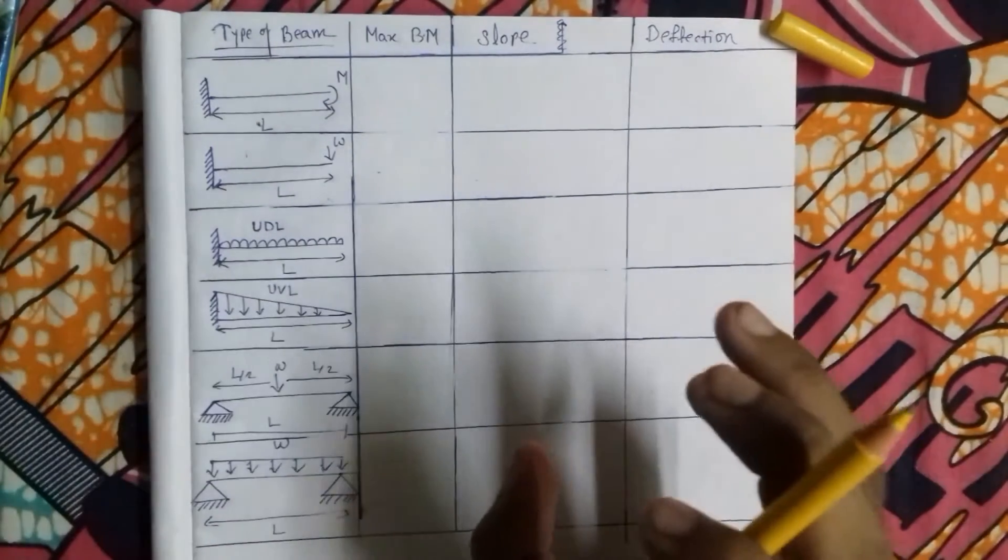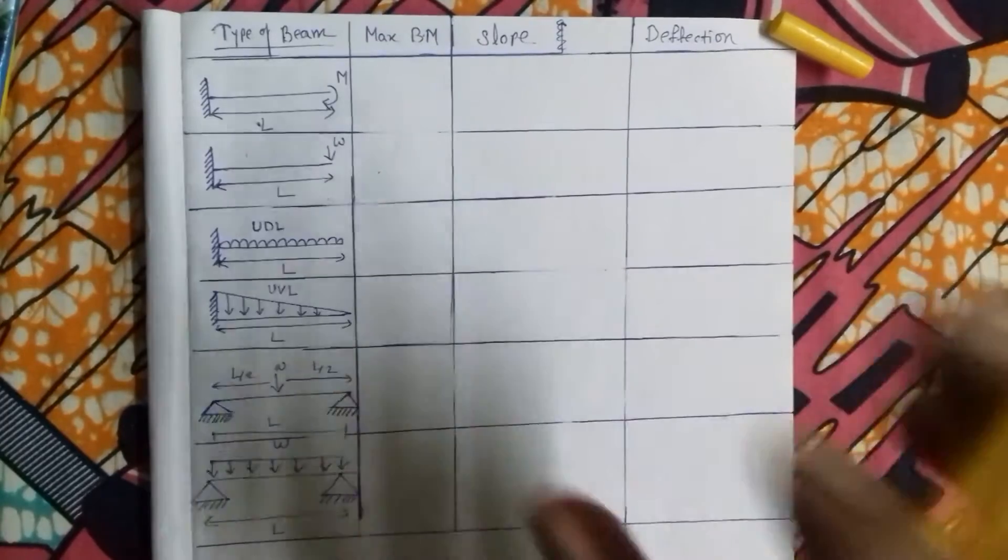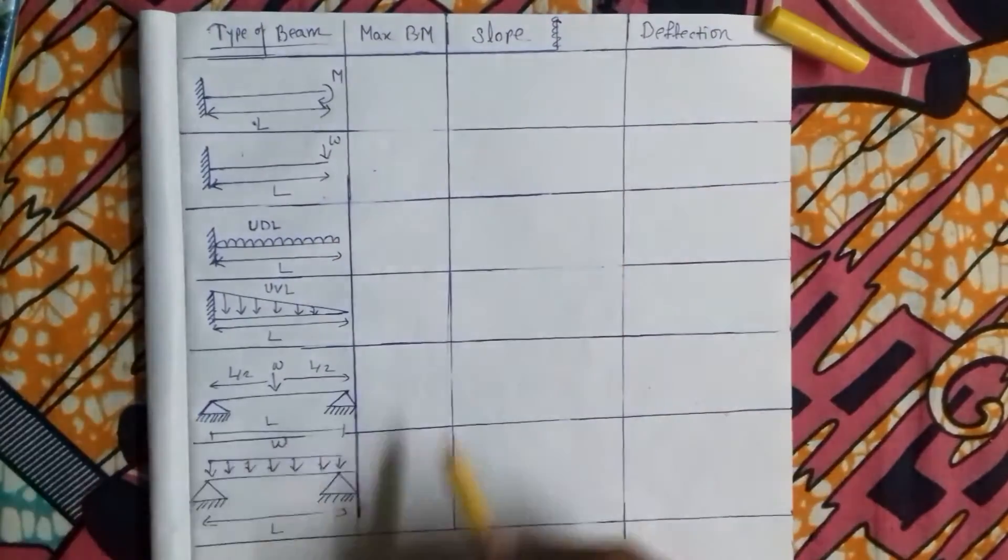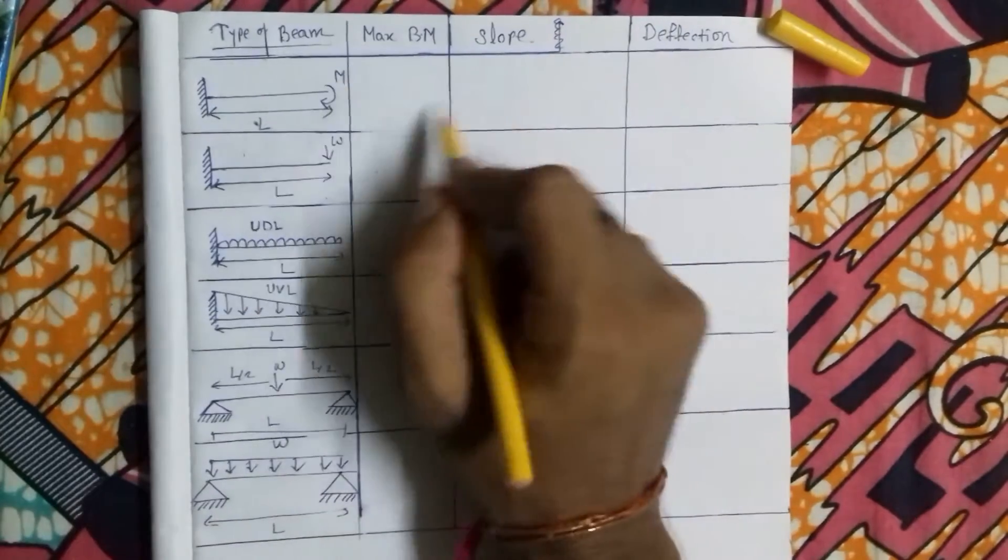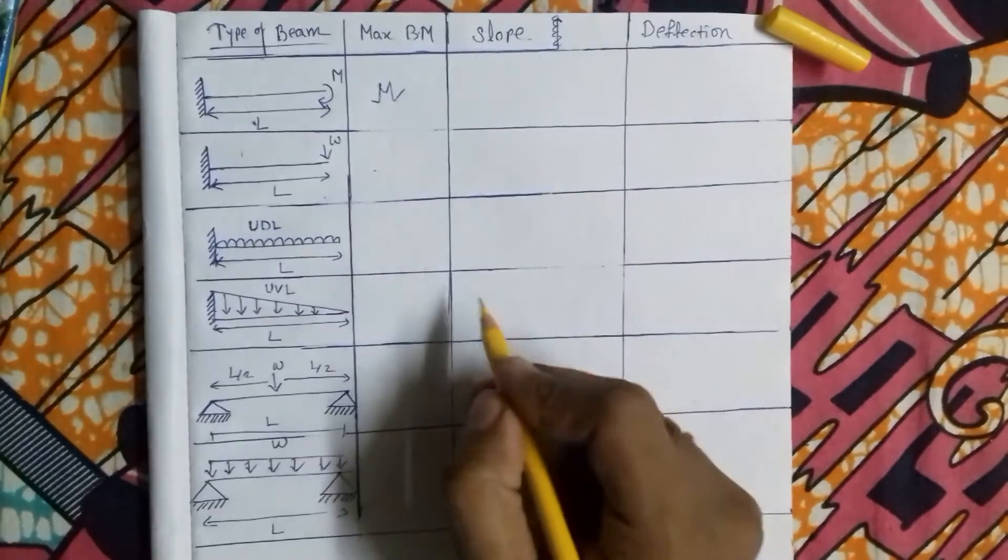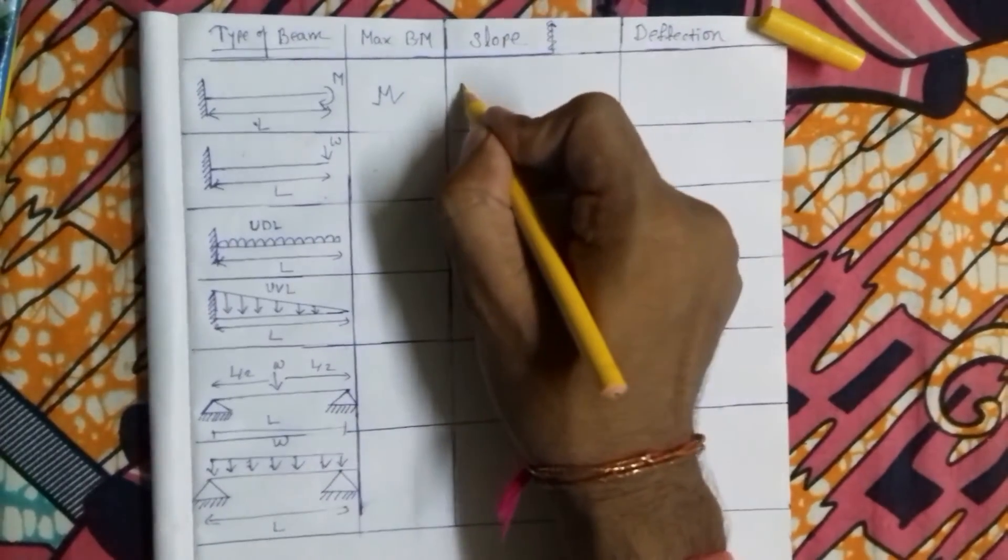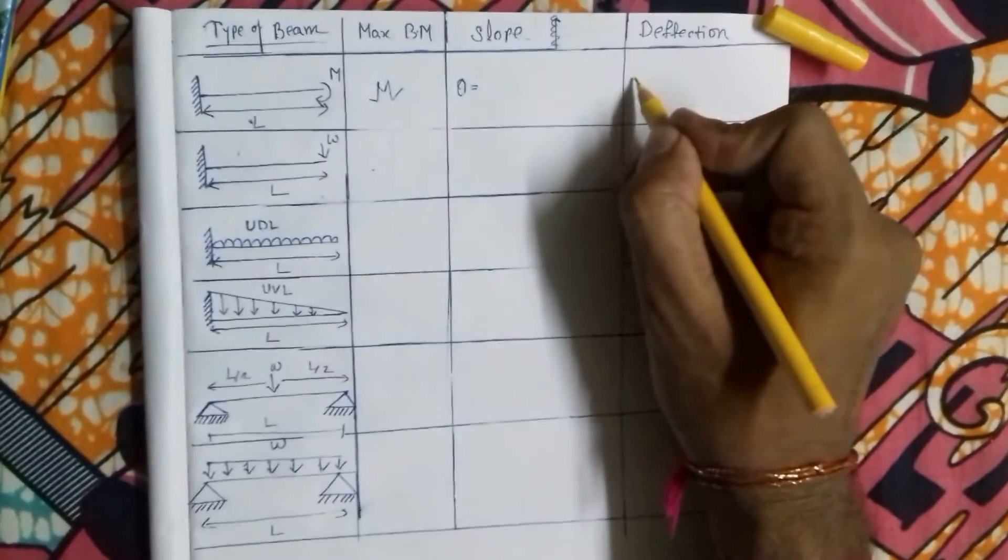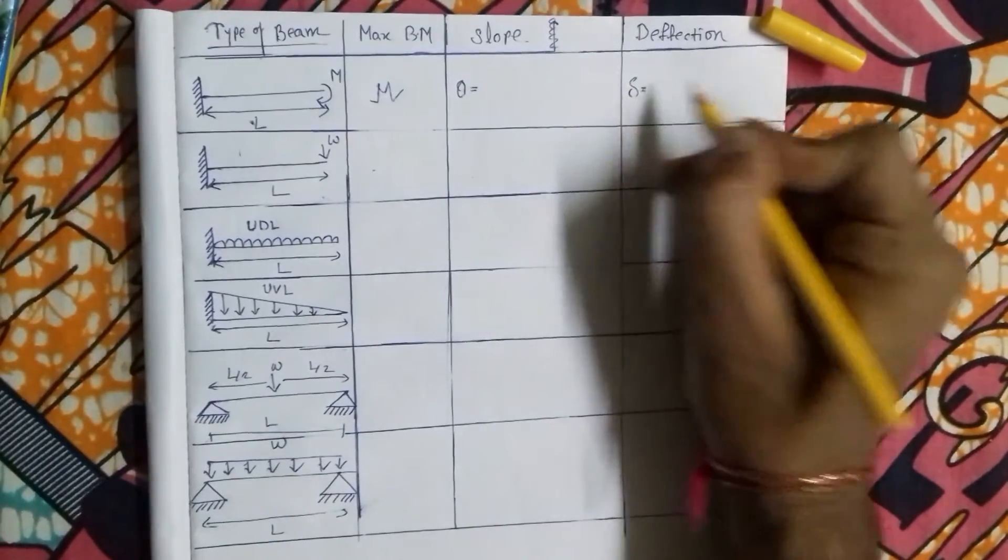Today I will show the shortcut method to remember all the formulas. So let's start. First of all, maximum bending moment is M, slope will be denoted by theta, and deflection will be denoted delta.